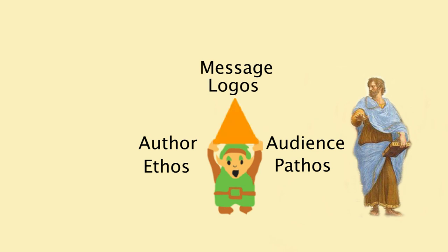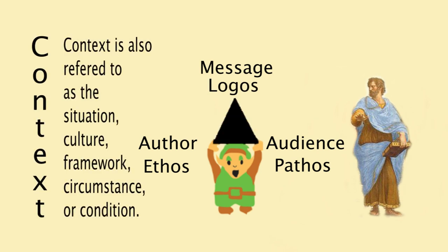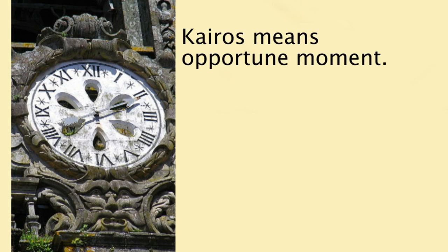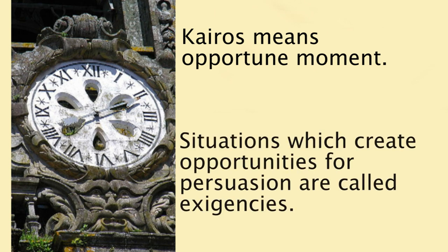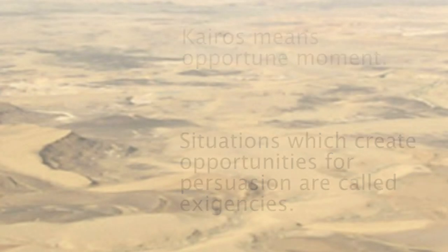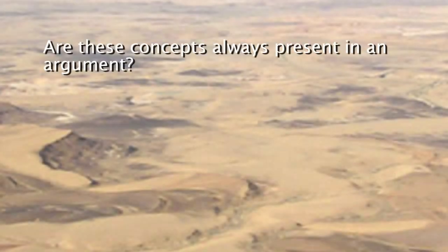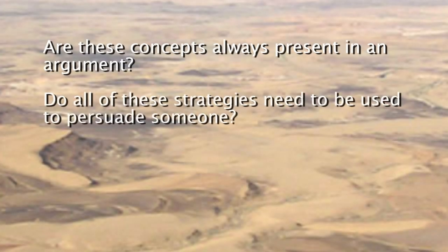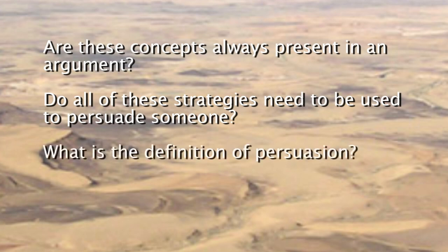These appeals exist inside of a context. The ancient Greeks also talked about kairos. Kairos means opportune moment. Kairotic moments are a good time to make an argument. Situations which create opportunities for persuasion are also called exigencies. Question: are these concepts always present in an argument? Do all of these strategies need to be used to persuade someone? What is the definition of persuasion? Think about it.